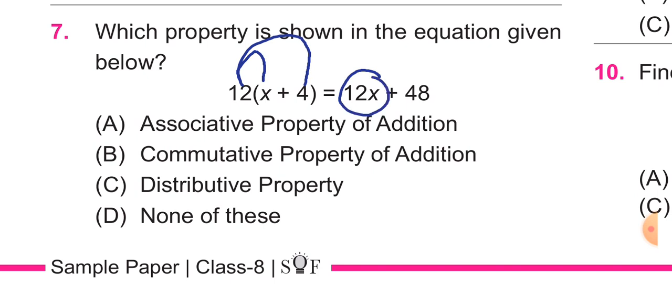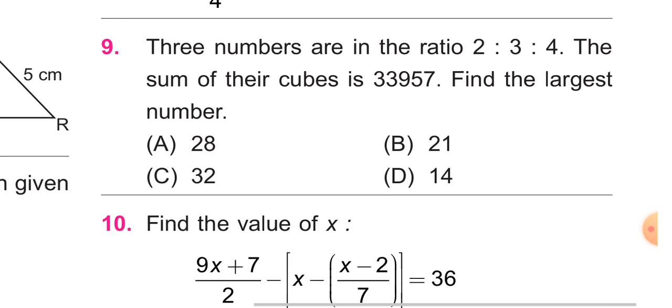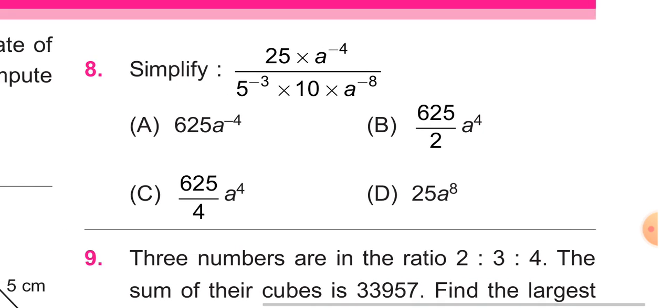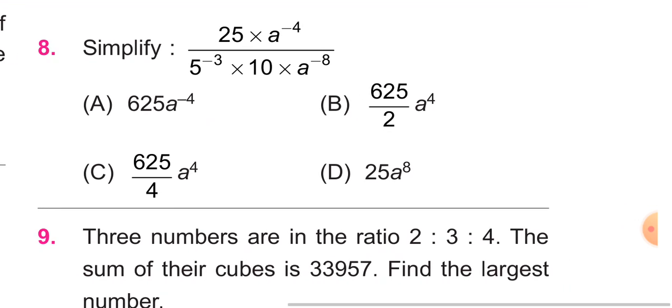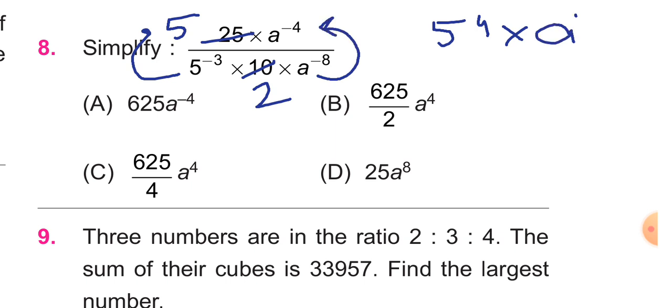This is the distributive property. Next, question number 8: simplify 25a to the power minus 4 upon 5. Cancel out, 25 and 5, five to the power three plus one is five to the power four into a to the power minus four plus eight. So a to the power four, 5 to the power 4 that is 625 upon 2, a to the power four. Option B is correct.